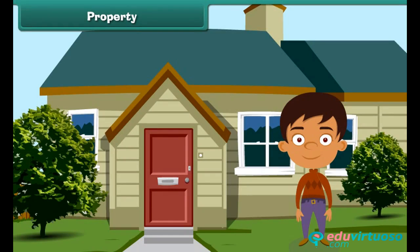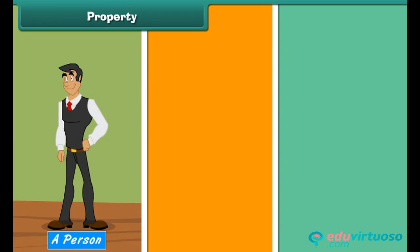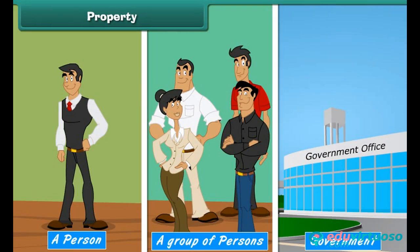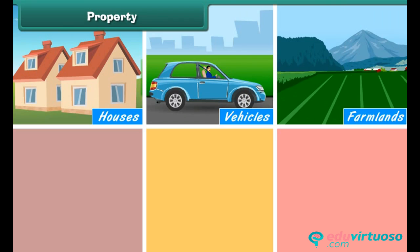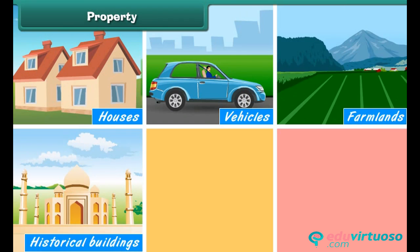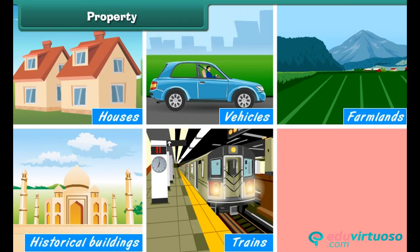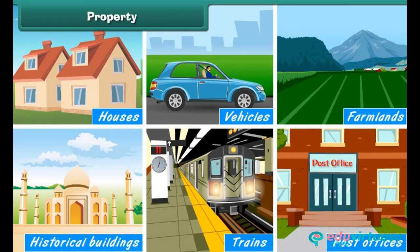Property is anything that is owned by a person, a group of persons, or government. Houses, vehicles, farmlands, historical buildings, trains, and post offices are all properties.